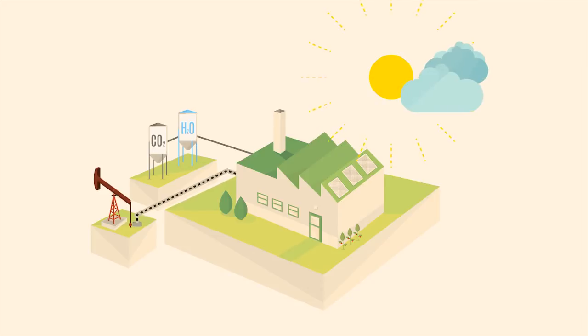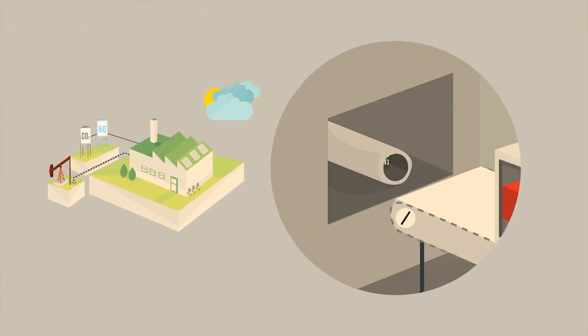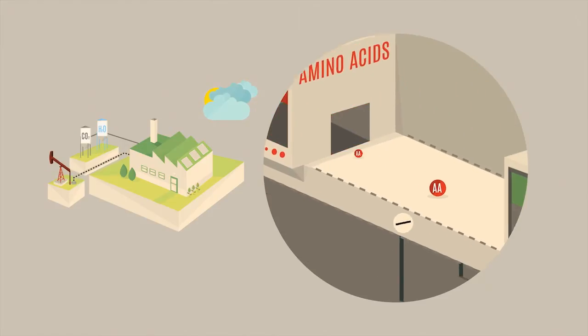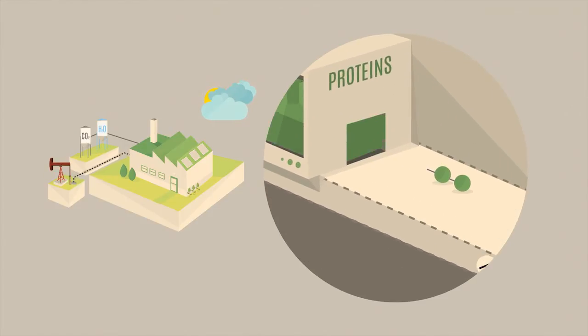But sometimes, unexpected events happen. The nitrates don't arrive to the leaves factory. The amino acids are drastically reduced. The factory is just ticking over.